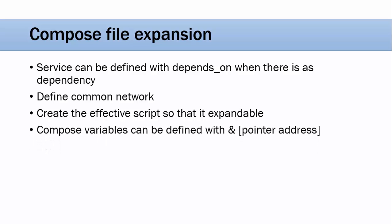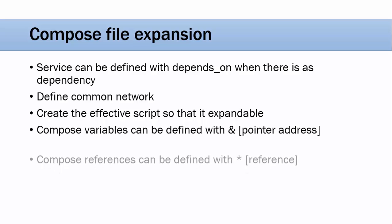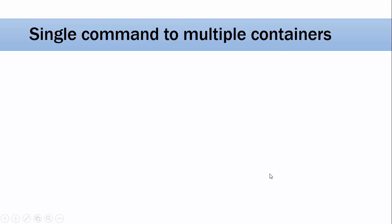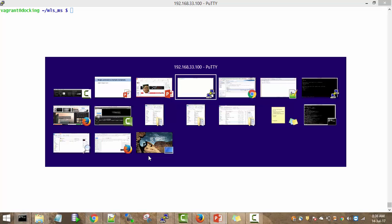The compose variables can be used just like C programming where ampersand is used for pointer address, whereas a compose reference can be defined with the star, which is going to refer to the defined value. So let us see a simple example - in the last session we have done compose up, and in this session we are going to see a new compose script.